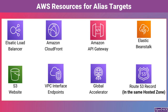Additional supported targets include VPC Interface Endpoints, used to privately connect to AWS services within your VPC; the Global Accelerator, which provides improved performance for globally distributed applications; and Route 53 records within the same hosted zone for advanced DNS configurations. ALIAS records simplify traffic management by directly pointing your custom domain names to these AWS resources.